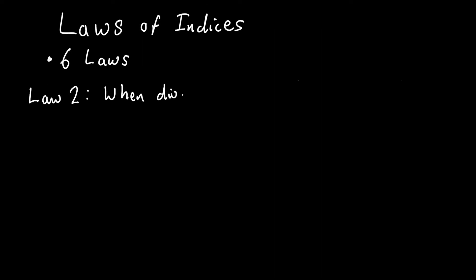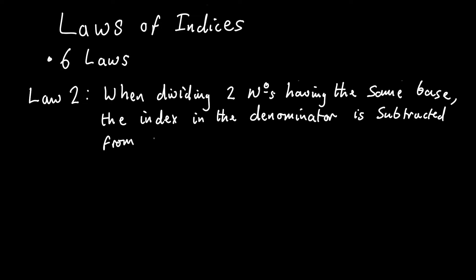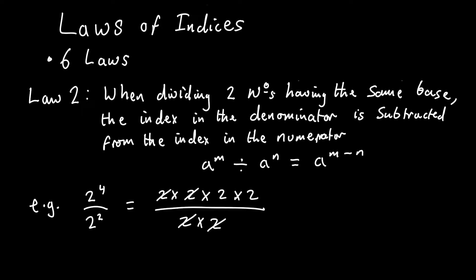Law 2: When dividing two numbers having the same base, the index in the denominator is subtracted from the index in the numerator. We can write this algebraically like this. And one example is 2 to the power of 4 divided by 2 squared. If we expand out the powers and cancel like terms, we are left with 2 times 2 or 2 squared.